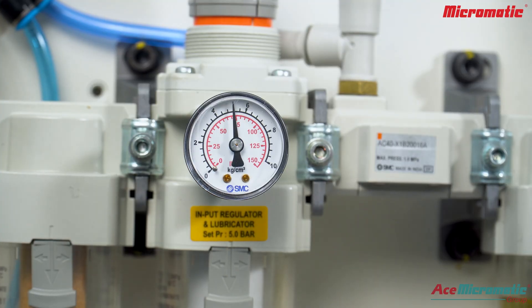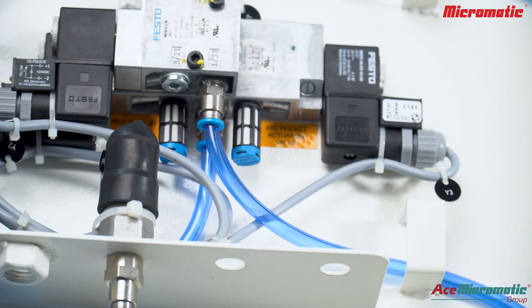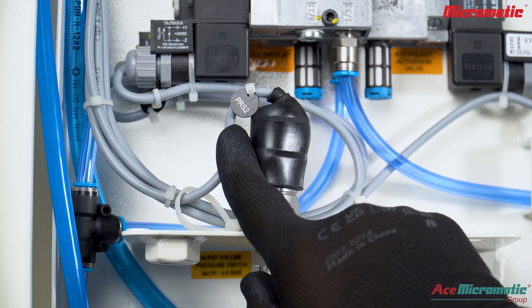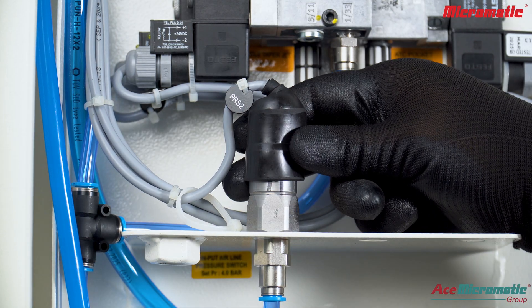In case the pressure is sufficient, inspect the pressure switch, its connections, and the wiring all the way to the electrical panel. Check the wiring of pressure switches and loose connections in the leads.